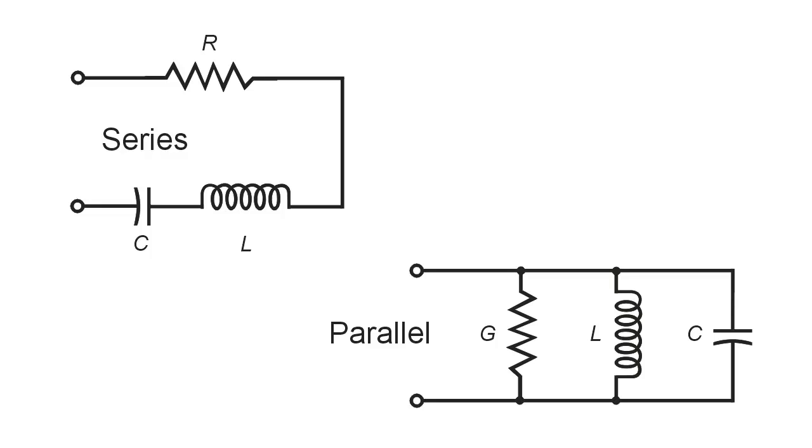When we have a series resistive inductive capacitive circuit like this, there is a specific frequency at which the capacitive reactance, the reactance of the capacitor, and the reactance of the inductor, the inductive reactance, exactly balance each other out. Remember, capacitive reactance is negative imaginary, and inductive reactance is positive imaginary.